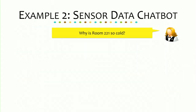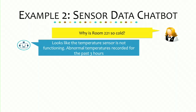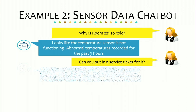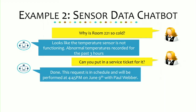Another example is for sensor data. 'Why is room 221 so cold?' The reply: 'Looks like the temperature sensor is not functioning — abnormal temperatures recorded for the past three hours.' This means temperatures outside the normal human range indicate a sensor problem rather than the room actually being cold. When asked to put in a service ticket, the system replies 'Done — this request is scheduled for 4:45 PM on this specific day with this specific person.' The system handles all of this repetitive and manual work for us.